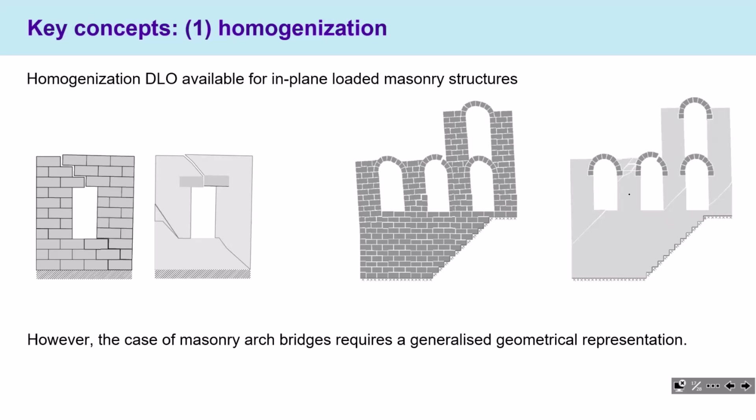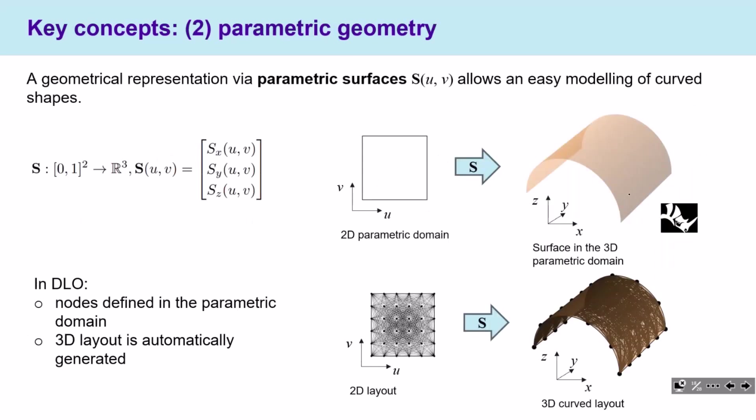The homogenized DLO method was already developed for the case of in-plane loaded masonry buildings. This was a recent application at the University of Sheffield in which homogenized DLO was applied to several geometries, in some cases quite complex. But these remain in-plane loaded cases, so in order to move to masonry arch bridges, we need to introduce parametric geometry — specifically, the use of parametric surfaces.